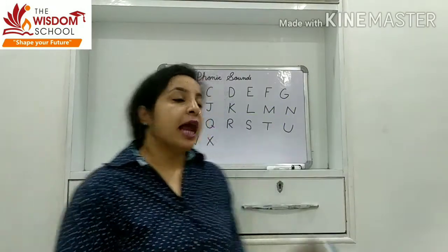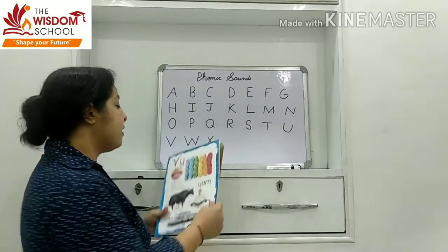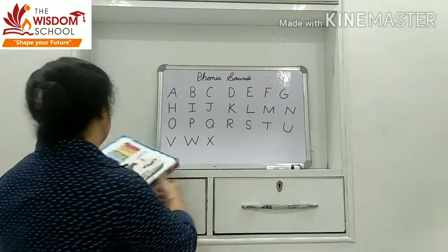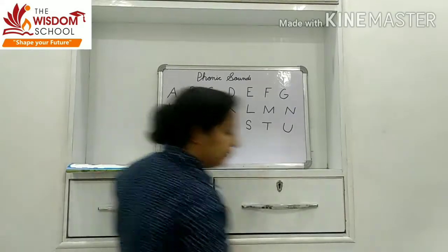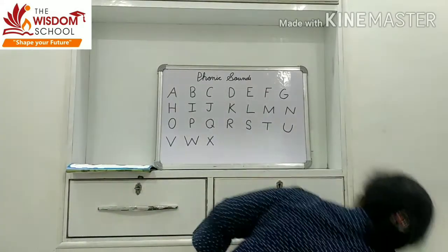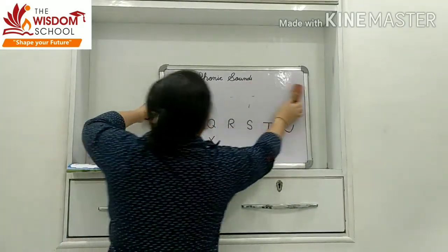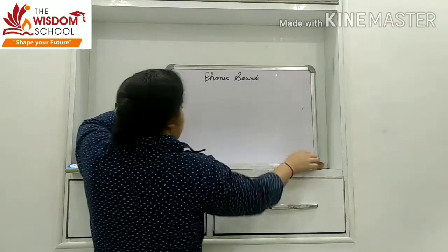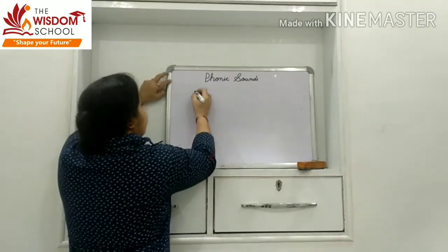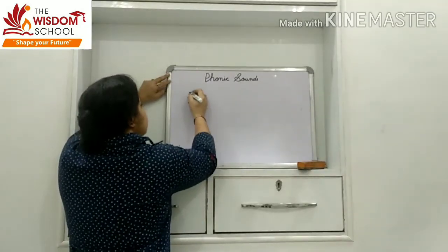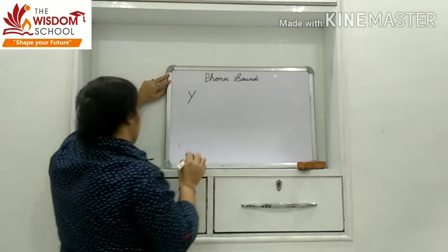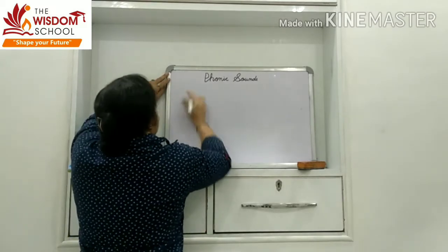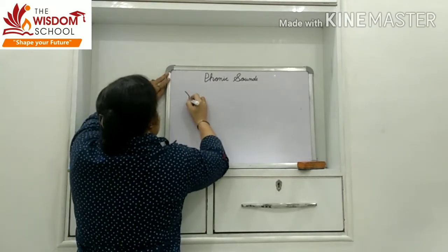Now our next letter is letter Y. Y — very easy letter. Look here, look at the whiteboard. This is the letter Y.